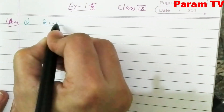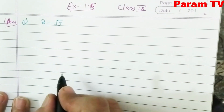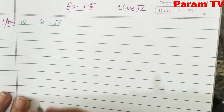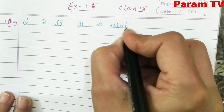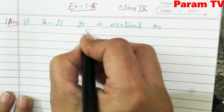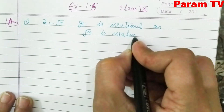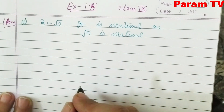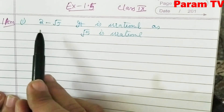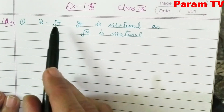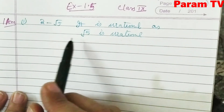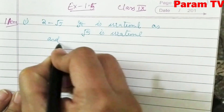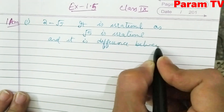First part is 2 minus root 5. This is an irrational number. Why? It is irrational because root 5 is irrational. This is a difference between a rational and an irrational number, so the result is irrational.